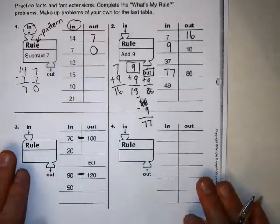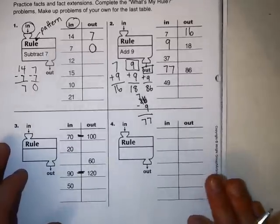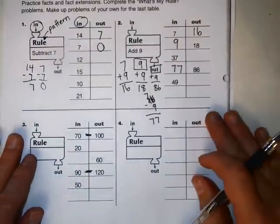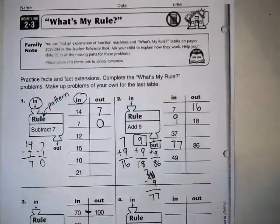And there's no fact practice on this paper. So if you have a few extra minutes, work on some flashcards or something. Just do a little bit of fact practice. So this is Homelink 2.3, What's My Rule? Alright, everybody.